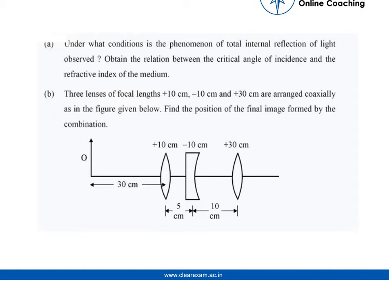Under what conditions is the phenomenon of total internal reflection of light observed? Find the relation between critical angle and refractive index. Three lenses of focal lengths plus 10 cm, minus 10 cm, and plus 30 cm are arranged coaxially as in the figure. Find the position of the final image formed by the combination.